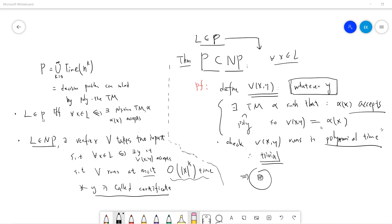Okay, so basically, l belongs to P if only for all x belongs to l, there is a polynomial Turing machine alpha, where alpha of x accepts.